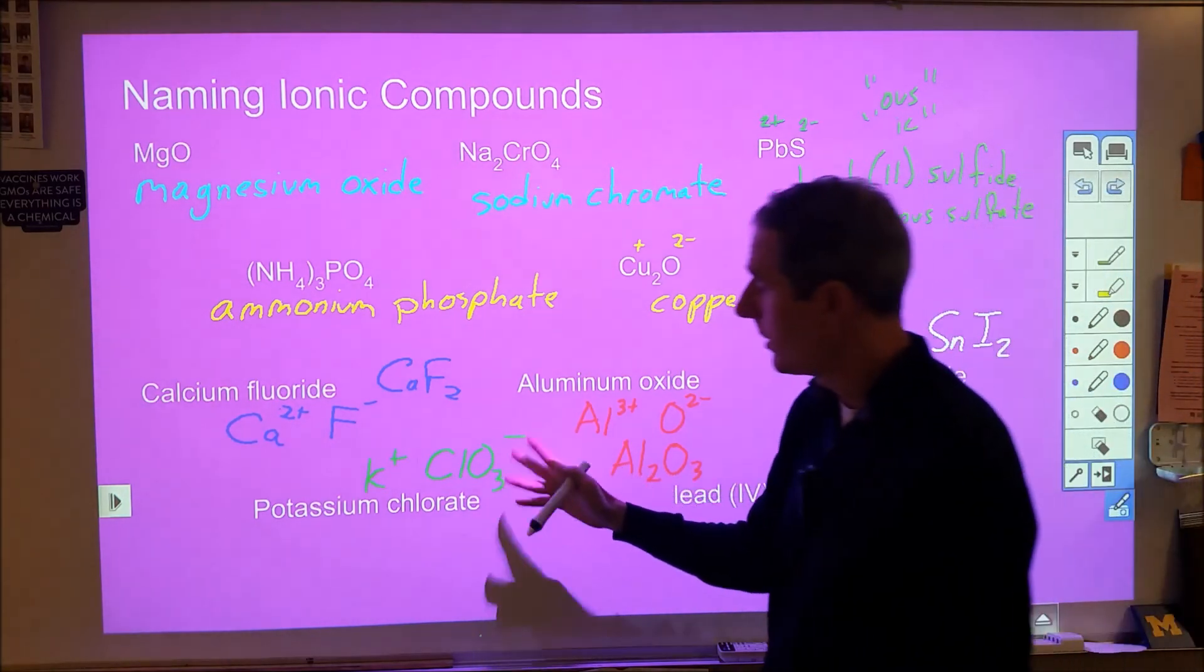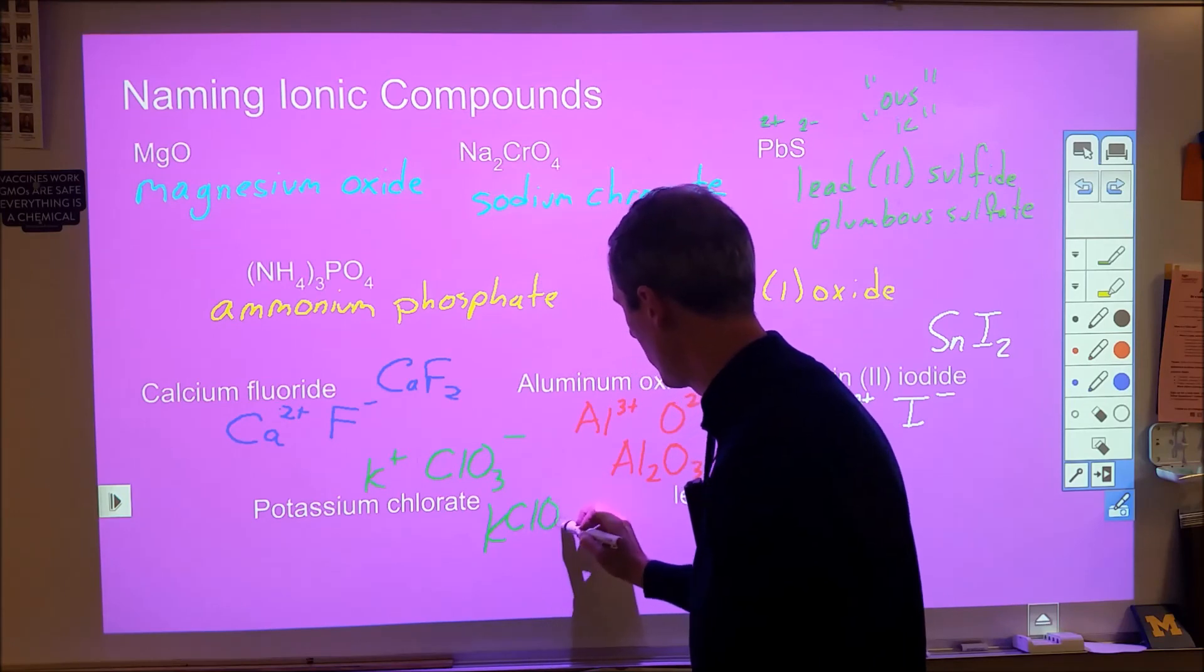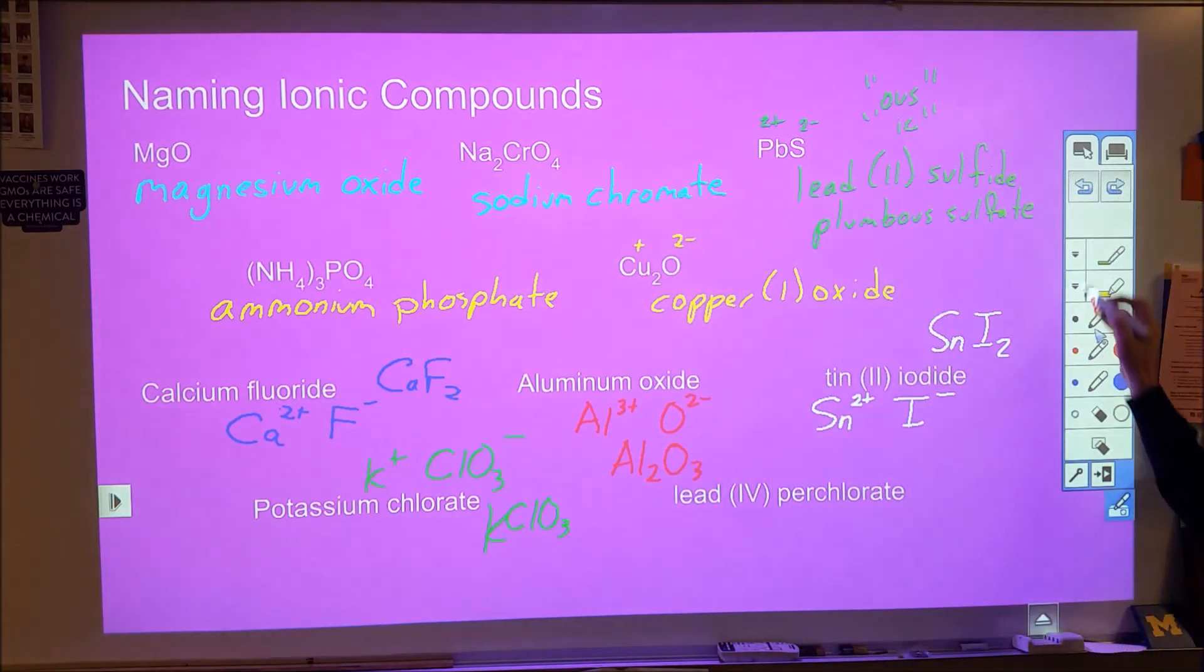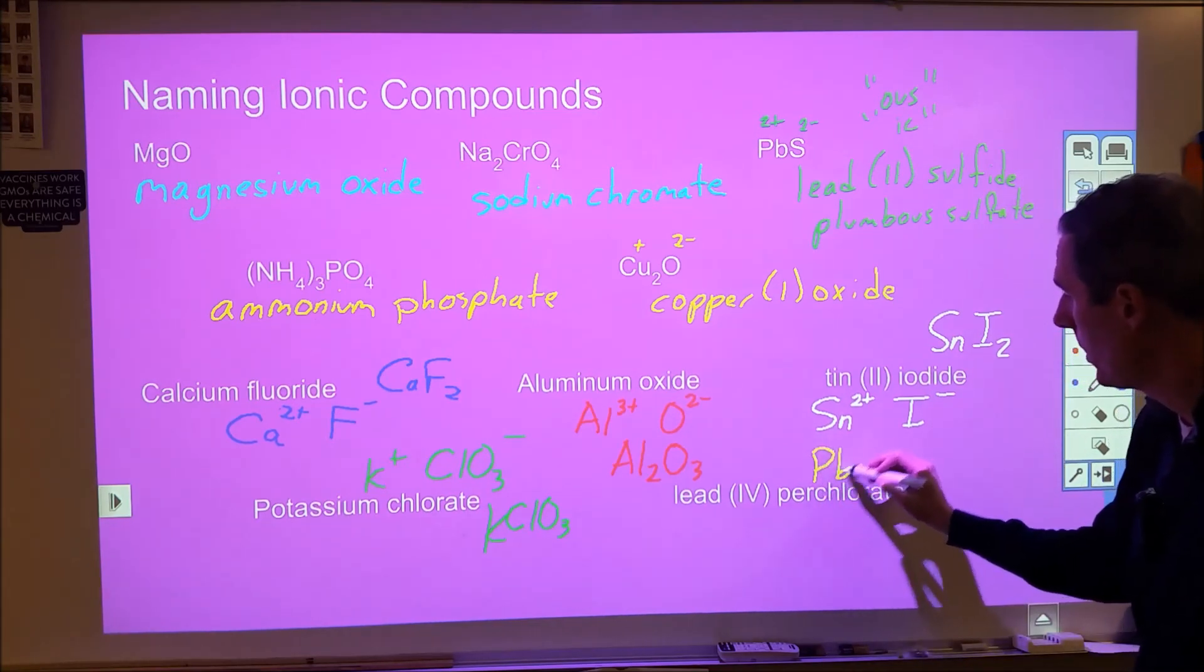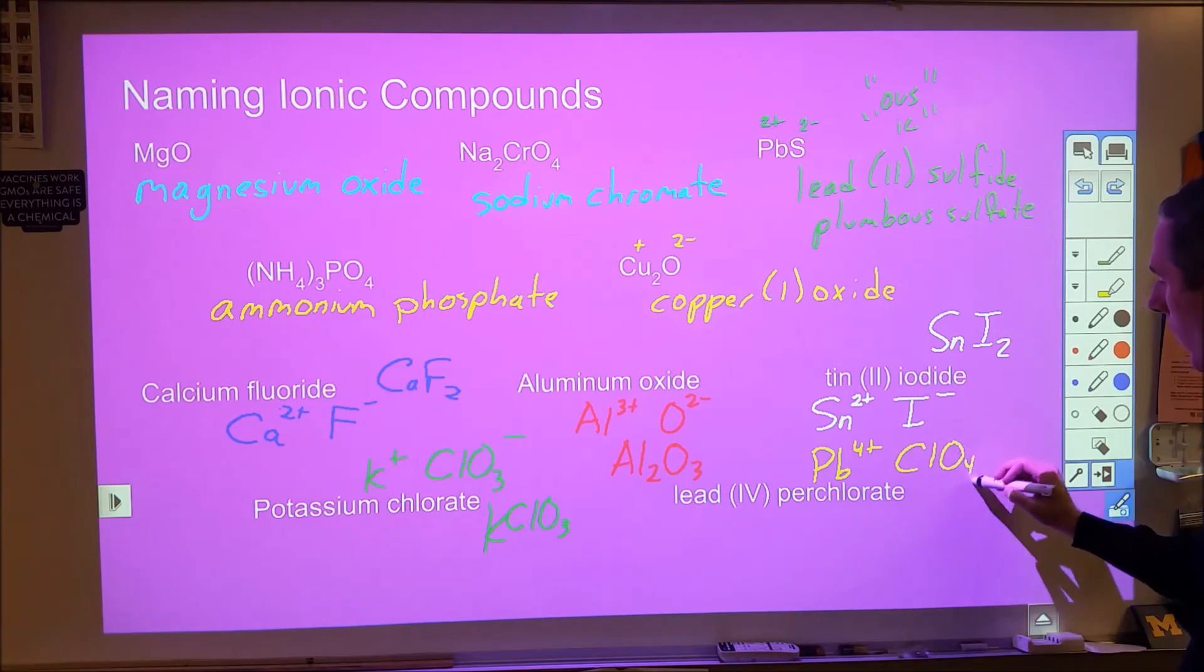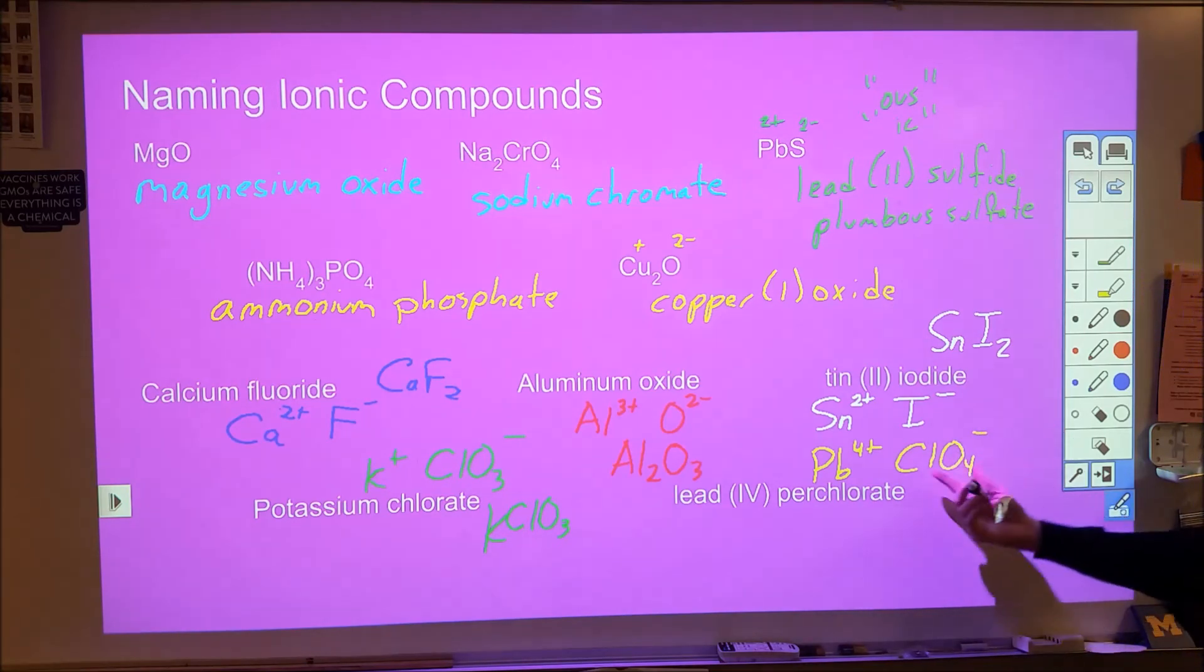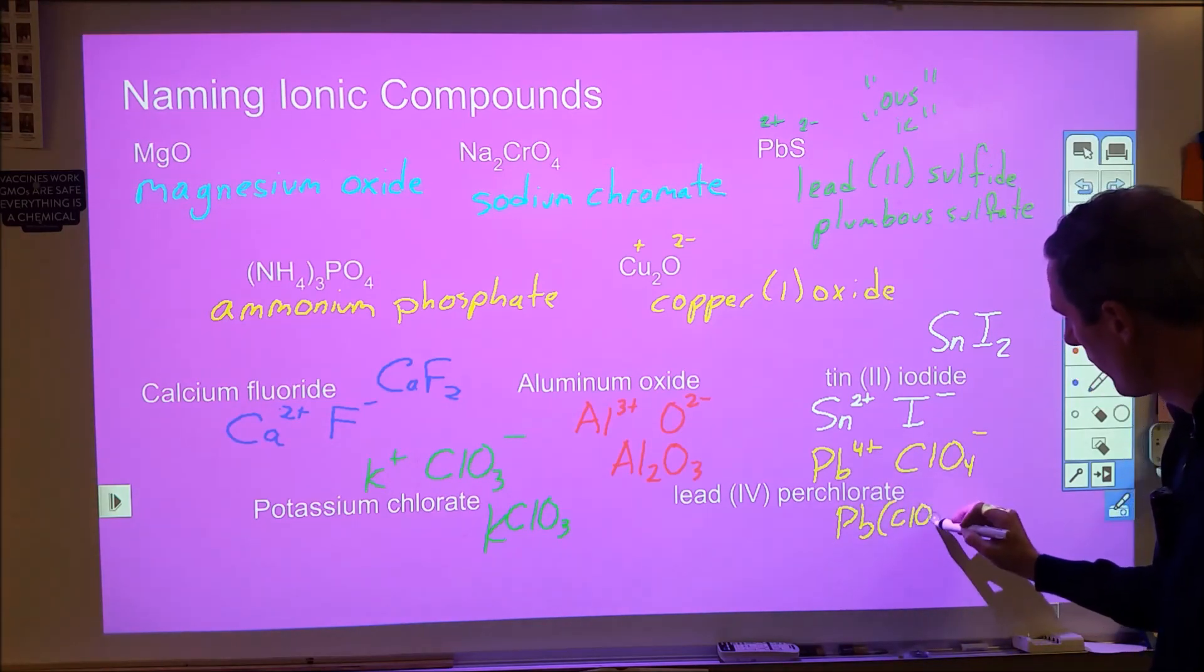Okay and then let's get into some polyatomic ions so down here we have potassium chlorate potassium is K+ and chlorate is a polyatomic ion ClO3 with a -1 charge so our formula would just be KClO3 and our last one here lead perchlorate so lead four is Pb4+ and perchlorate is ClO4 with a -1 charge so I need four of these groupings so it would be Pb(ClO4)4.